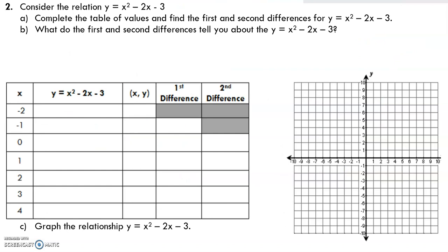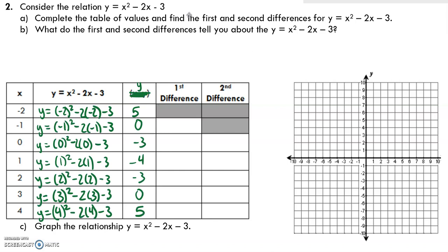Now let's consider a parabola: y equals x squared minus 2x minus 3. We want to make a table of values, find the first and second differences, then ask what they tell us about the parabola, and graph it. The first thing is to fill in the table based on the given x values. When x equals negative 2: y equals negative 2 squared minus 2 times negative 2 minus 3, which gives 4 plus 4 minus 3, which is positive 5. Filling in the rest of that chart gives the complete table.